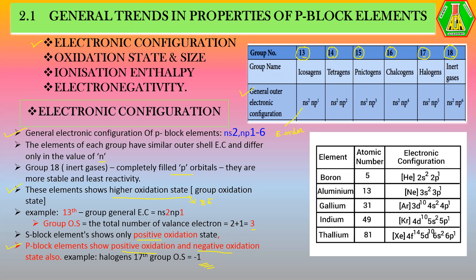Let's look at a large example: Halogen. Halogen is the 17th group. In this element, the oxidation state is generally minus 1.